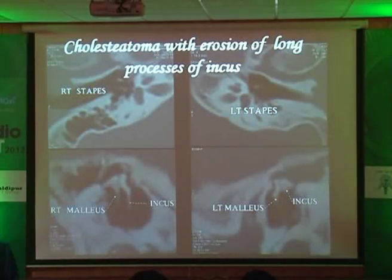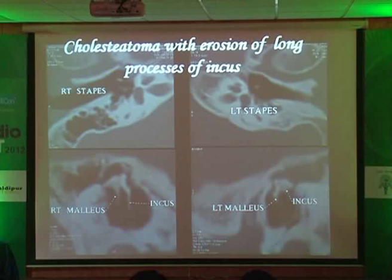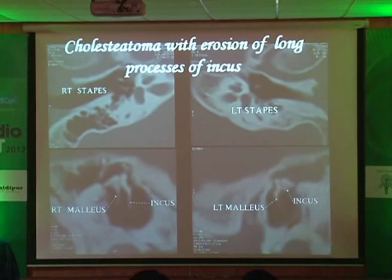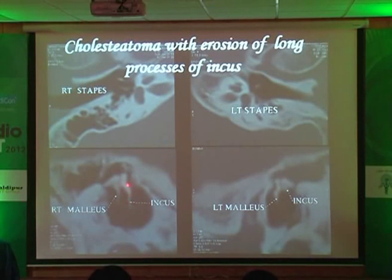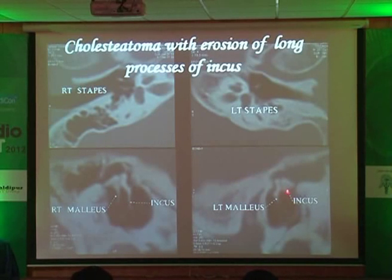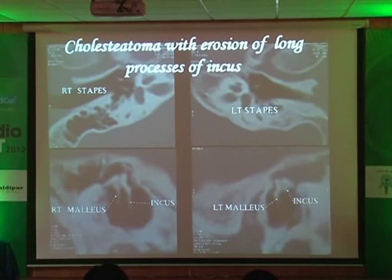Here is one more illustration done three days ago. Again you see the long process of the incus being eroded. The right side is absolutely normal — the right malleus and right incus are normal. But the long process of the left incus is eroded: classical for cholesteatoma.